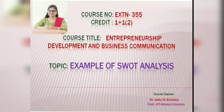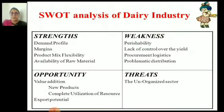Let's start today's topic - the example of SWOT analysis. First of all, we are going to take the example of the dairy industry - SWOT analysis of dairy industries. According to the diagram of SWOT analysis, that is strength, weakness, opportunity, and threat, you should first identify which are your strengths, weaknesses, opportunities, and threats according to your enterprise, project, organization, or business.